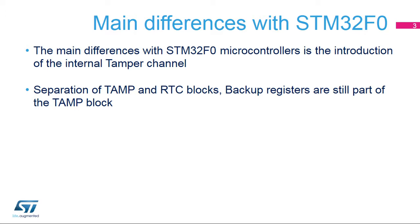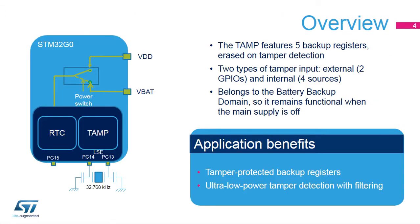Backup registers are contained in the TAMP block. In the STM32F0, a unique block is in charge of both tamper and RTC units. The TAMP peripheral features five 32-bit backup registers used to preserve data when the main supply is off. These backup registers can be used to store secure data as they are erased when a tamper event is detected on the tamper pins or on some internal events. The tamper detection is functional in low-power modes when the VBAT domain is supplied by a backup battery.